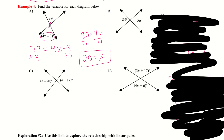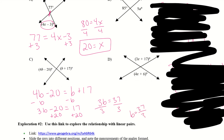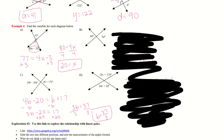Same with C. I'll subtract B, giving me 3B minus 20 equals 17. Add 20 to both sides: 3B equals 37. Divide by 3 to get B equals 37 over 3. They are going to be equal no matter what is on either side of your vertical angles. Take a second, pause the video, and try B and D.